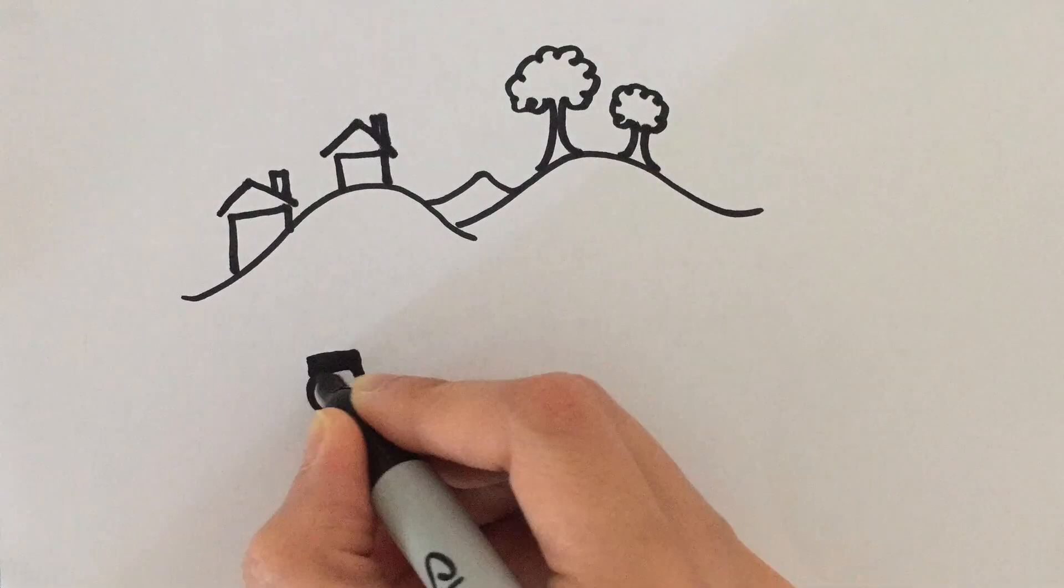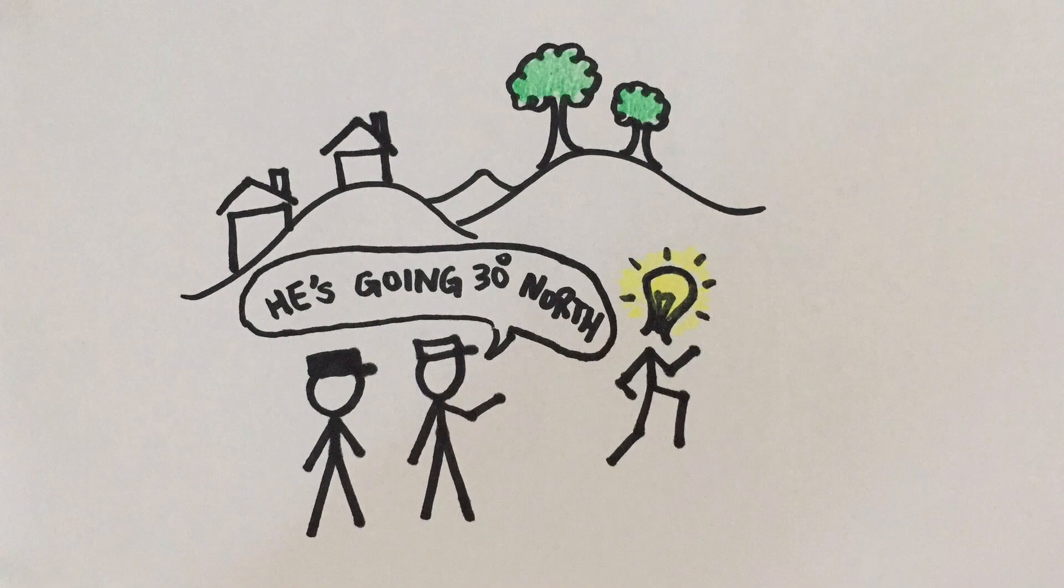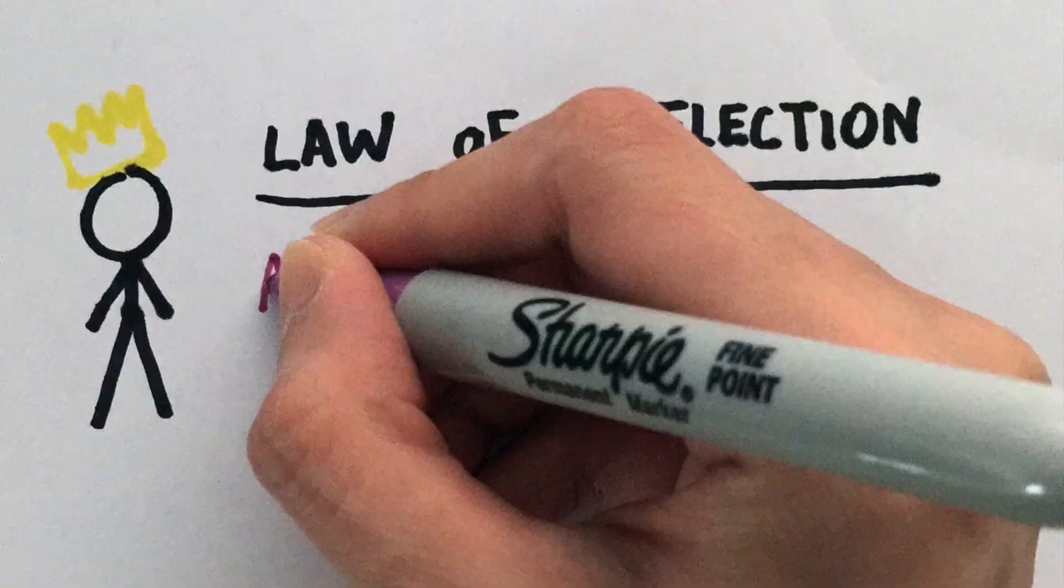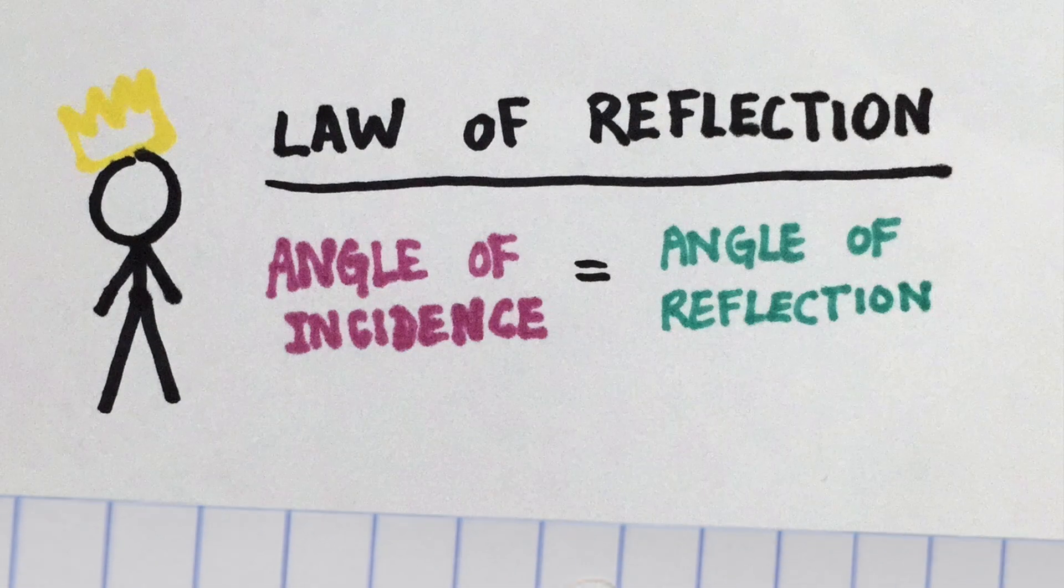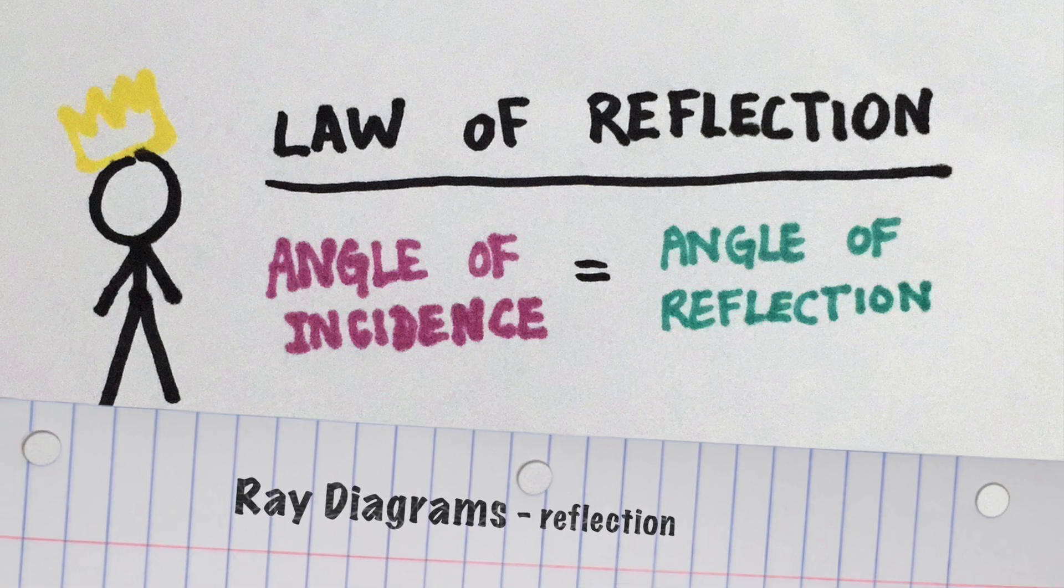We can predict the direction of a reflected wave using the law of reflection. The angle of incidence is always equal to the angle of reflection. To explain this, let's look at a ray diagram.